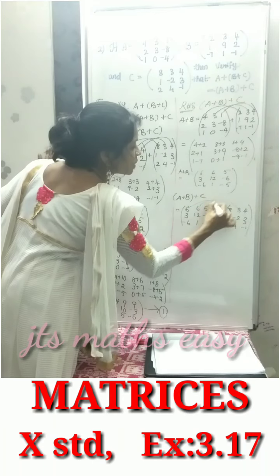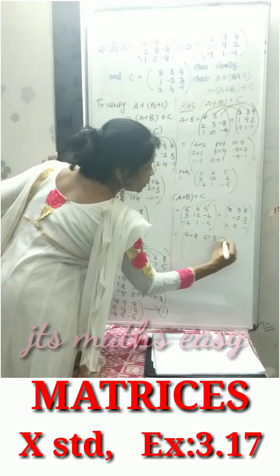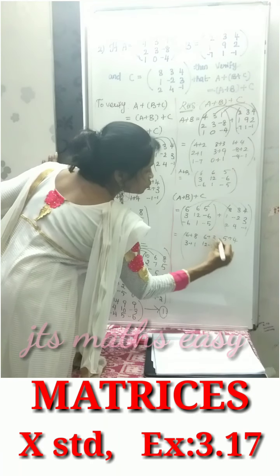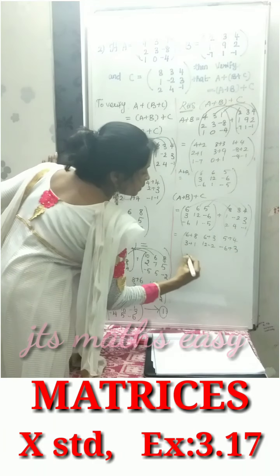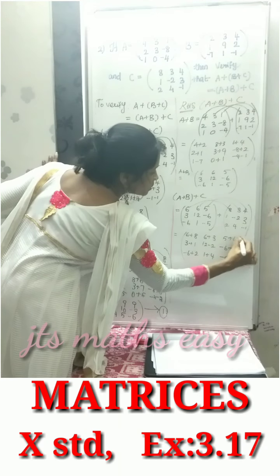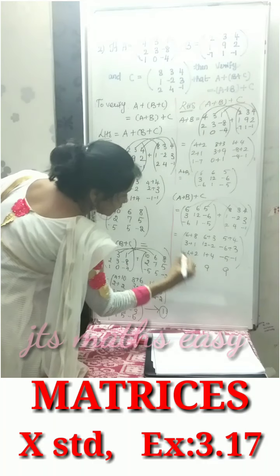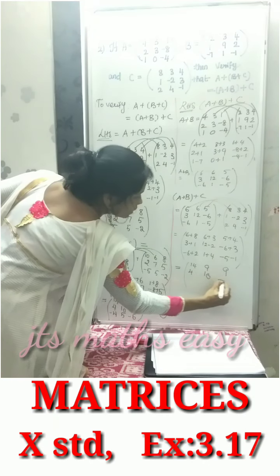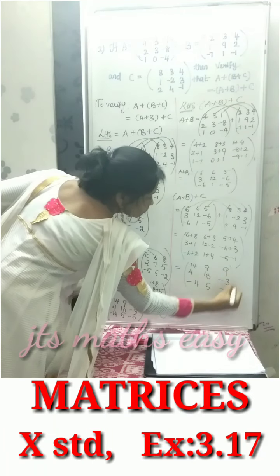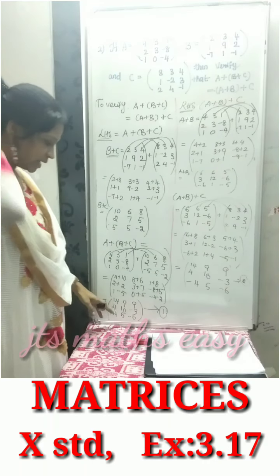Again, add corresponding positions. 6 plus 8, 6 plus 3, 5 plus 4. Then 3 plus 1, 12 minus 2, minus 6 plus 3. The answer is 14, 9, 9, 4, 10, minus 3, minus 4, 5, minus 6. Name this as equation 2.